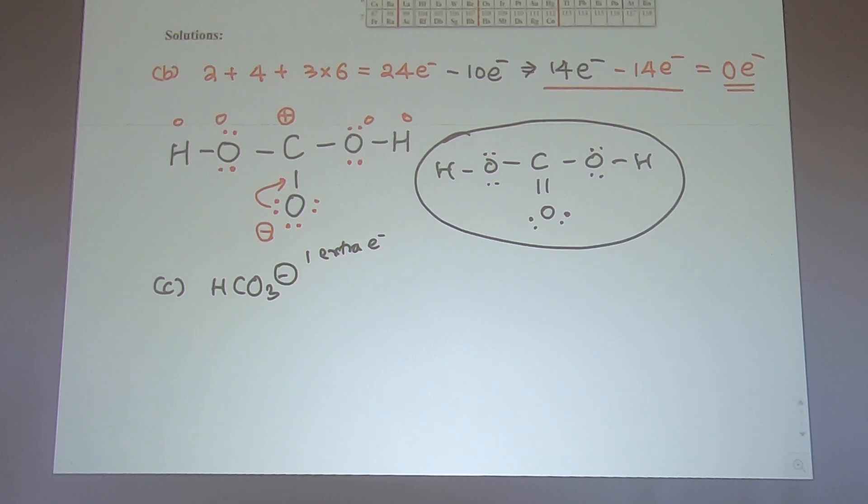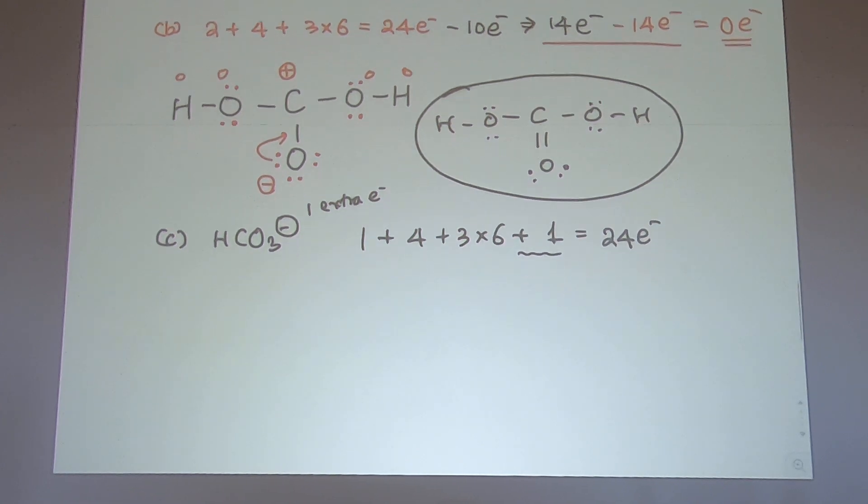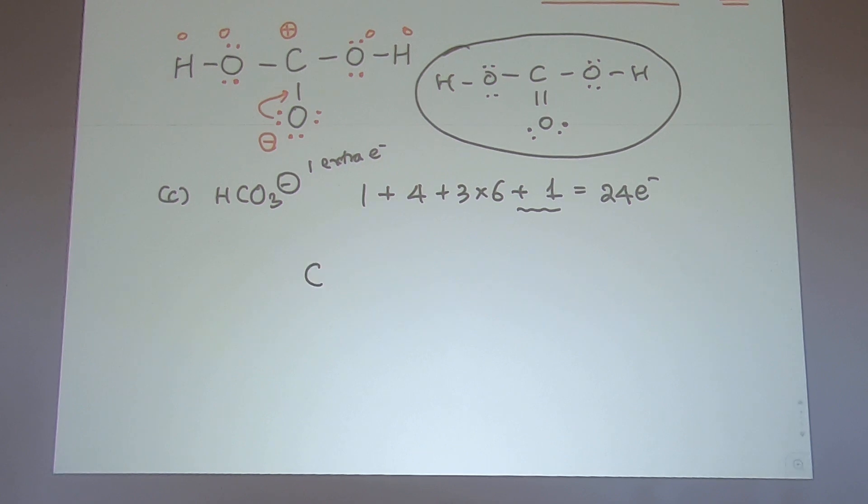HCO3 minus, in this case you have one extra electron. So therefore hydrogen one, carbon four, oxygen eighteen. Same scenario as before. I'm going to write carbon oxygen oxygen oxygen hydrogen here. One, two, three, four, so I got four bonds, eight electrons used, so 16 electrons. Then one two three four five six, one two three four five six.